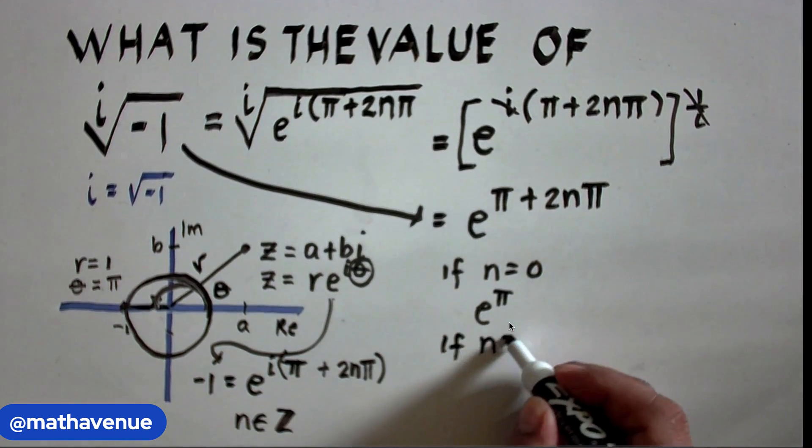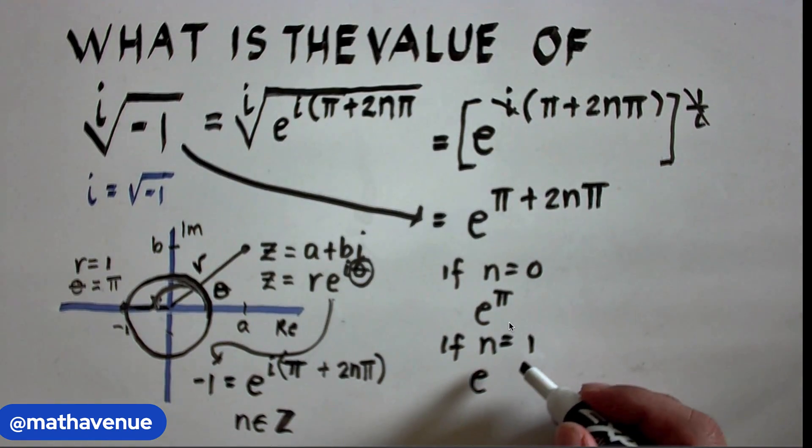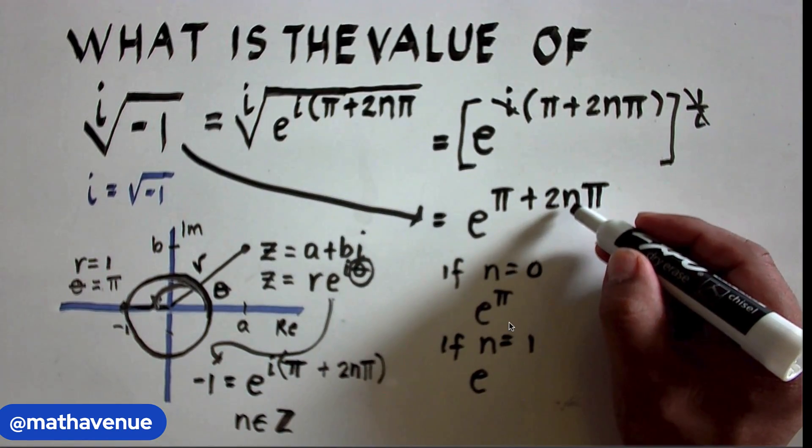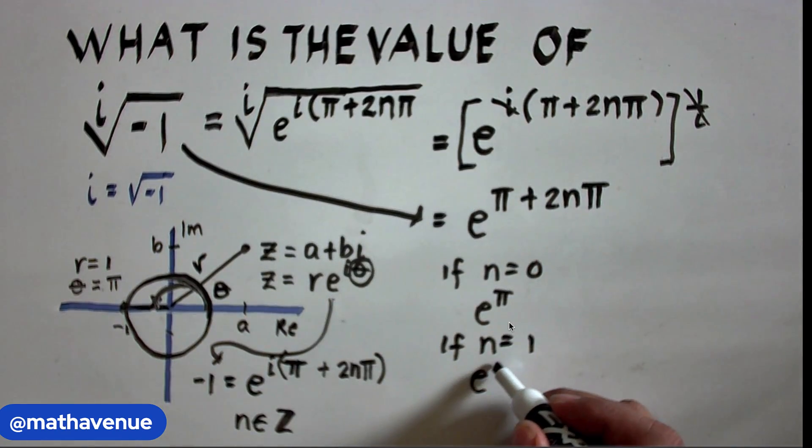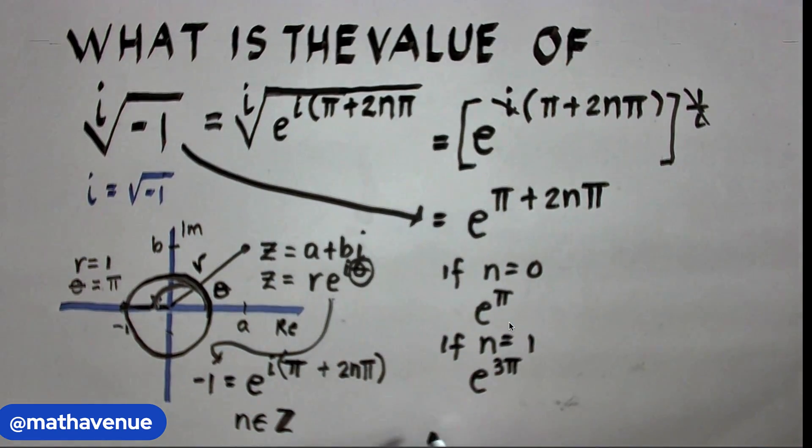Now, if n equals 1, then this becomes e raised to, this becomes 2 times 1 is 2 times π is 2π plus π, that is e^(3π). And, if you keep substituting integers to n, you notice that some of the values are e^π, e^(3π), e^(5π).